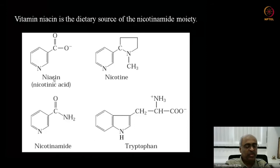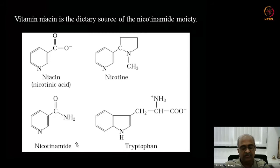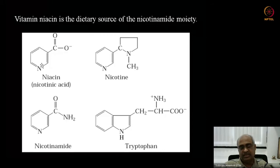Nicotinamide normally comes from niacin, a B-complex vitamin required in the diet, although it can also be made from tryptophan. However, the amount made from tryptophan is not sufficient to produce all the NAD we need. Sometimes the protein in our food may not have sufficient tryptophan — for example, if you are eating too much corn, which is deficient in tryptophan.